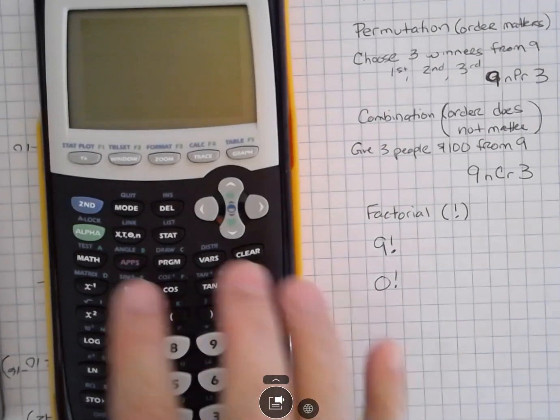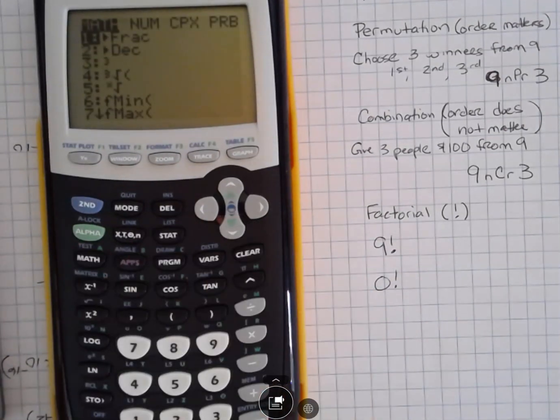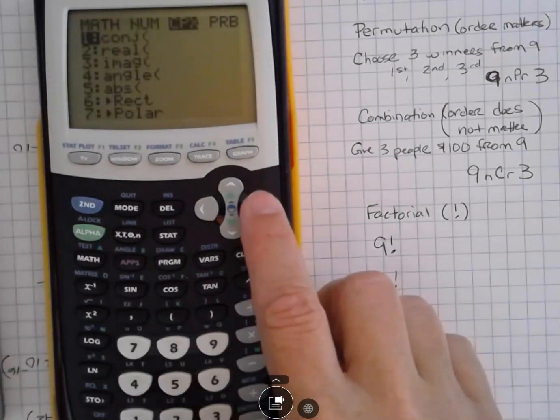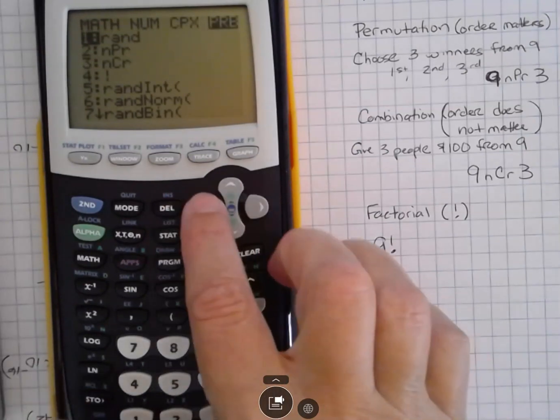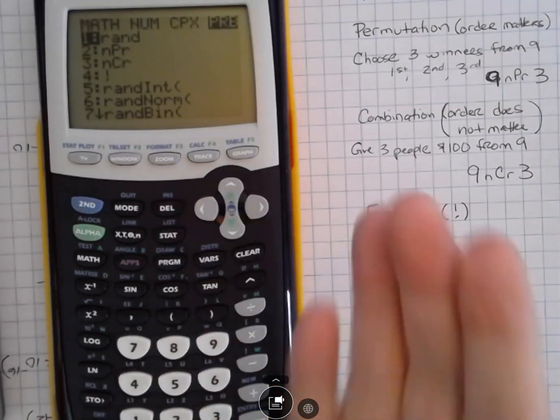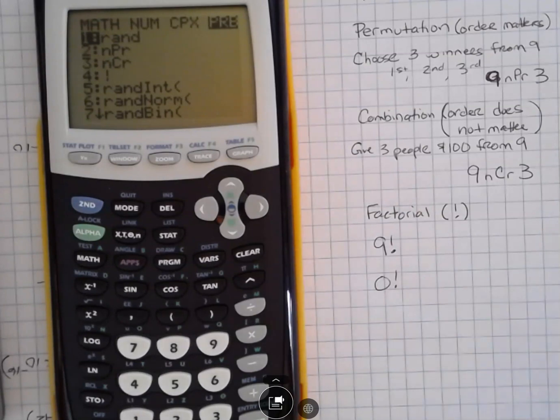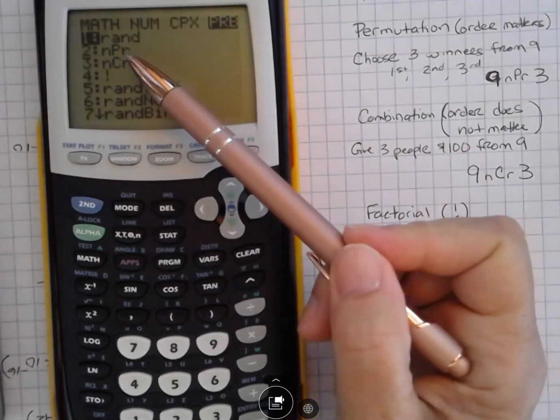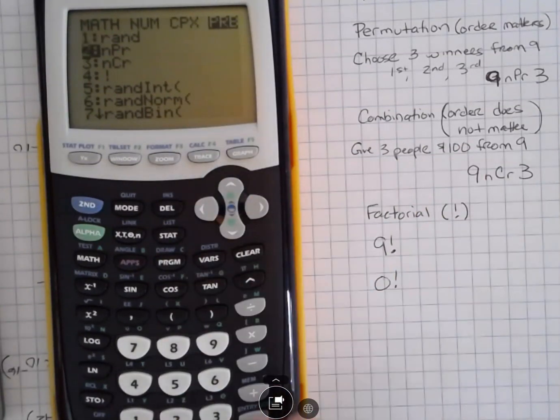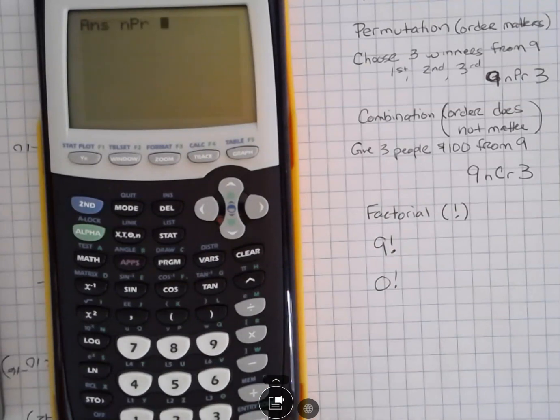We're going to find that button under math and then probability. You can scroll across the top like this to get to PRB or starting at math, you could just go one backwards to get there. And then you'll see number two is the nPr button. So if I go down to that and hit enter, I can get that button.